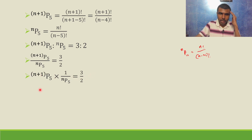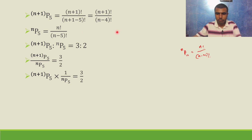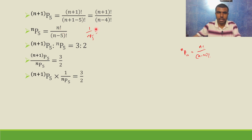Now, n+1 P5 is n+1 factorial by n minus 4 factorial. And 1 by nP5 is the reciprocal, which is n minus 5 factorial by n factorial.